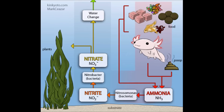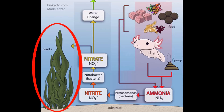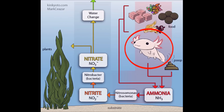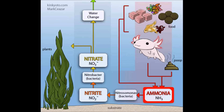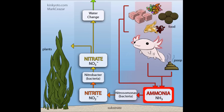When leftover food, poop, plant matter, or dead bodies start to decompose in your tank, ammonia is released into the water column. Ammonia is highly toxic, but luckily there are beneficial bacteria called Nitrosomonas that live on every surface of your tank and can metabolize this ammonia into something else called nitrite.